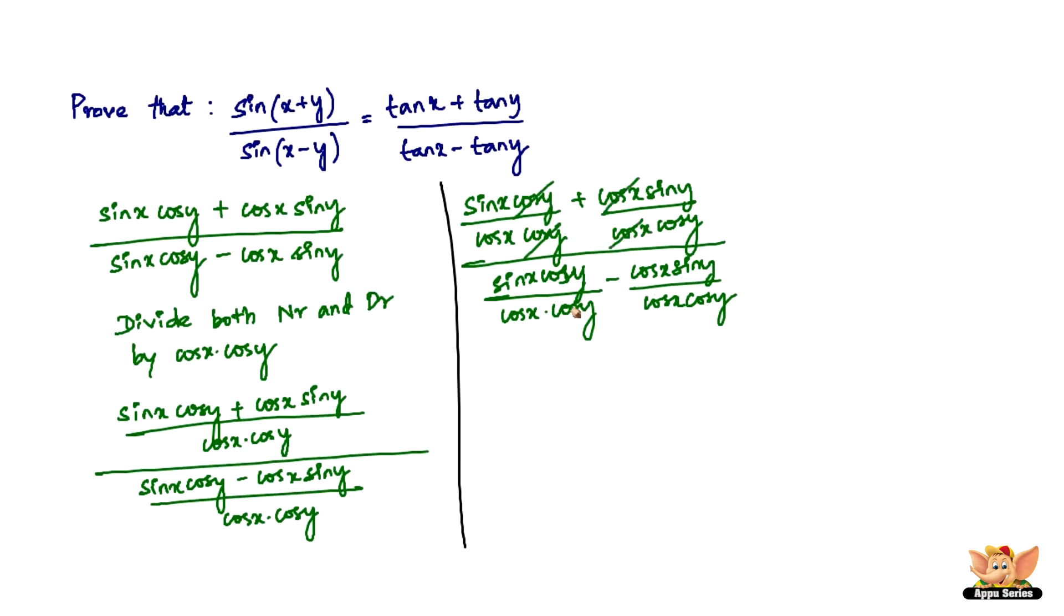So here cos y cos y gets cancelled. Here cos x cos x gets cancelled. Here again cos y cos y. Here again cos x cos x. So what do we get finally? Sin x by cos x which is a tan x plus sin y by cos y which is a tan y divided by sin x by cos x which is again a tan x minus sin y by cos y which is again a tan y. So that's all it was. Pretty simple problem.